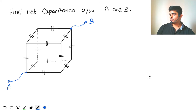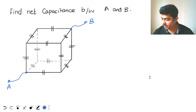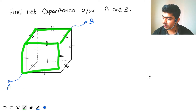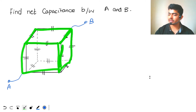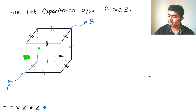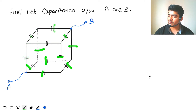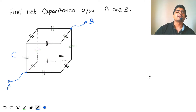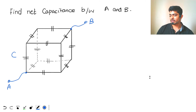We have to find the net capacitance between A and B. What we are given is a cube, and each of the edges has a capacitor of capacitance C. So we have to find the net capacitance between A and B.